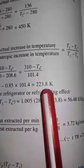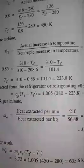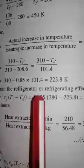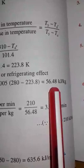The refrigerating effect is given by Cp × (T1 − T4-dash). From the figure, the cooling portion corresponds to T1 minus T4-dash actual. Using the relation, the refrigerating effect = Cp × (T1 − T4-dash) = 1.005 × (280 − 203.8) = 56.48 kJ/kg.